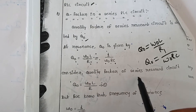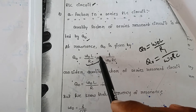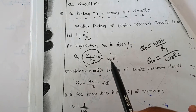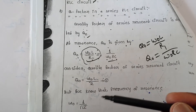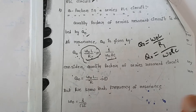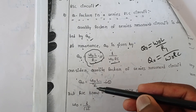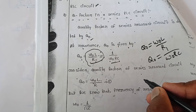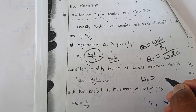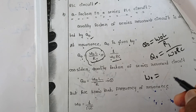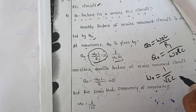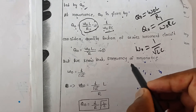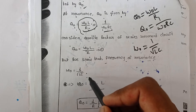Now consider the quality factor of series resonant circuit. Q0 = omega_0 * L / R — you can choose this formula. We know the frequency of resonance: omega_0 is nothing but resonant frequency. The resonant frequency in series RLC circuit is omega_0 = 1 / sqrt(L * C).